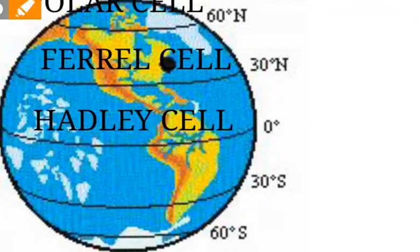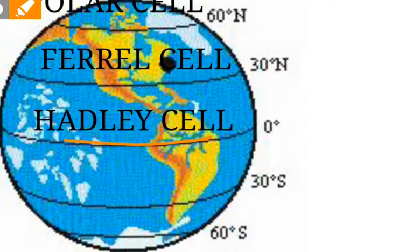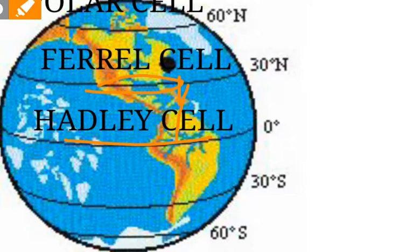The temperature at the equator will be the highest as the sun rays are strongest here, so the pressure will be lower here. The winds at 30 degree latitude will try to move towards the equator as the pressure at the equator is lower.